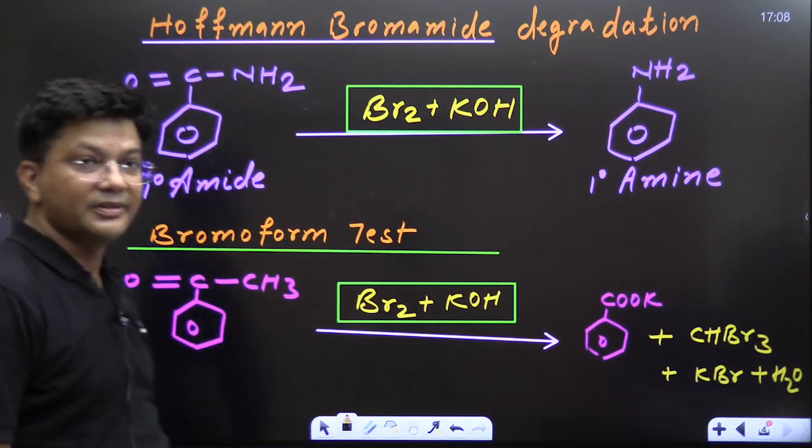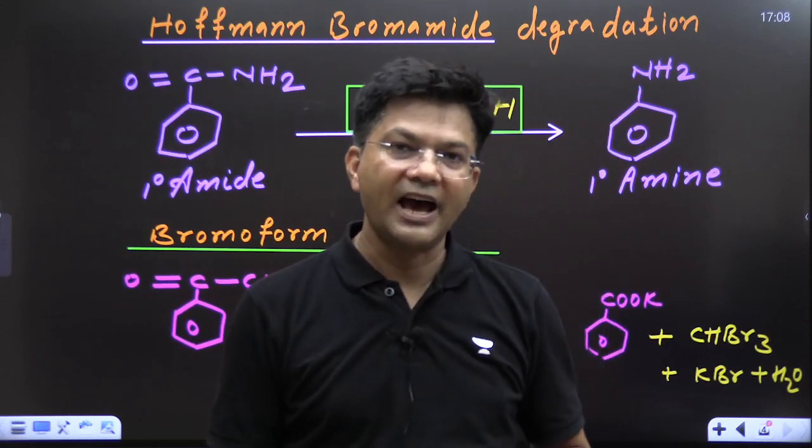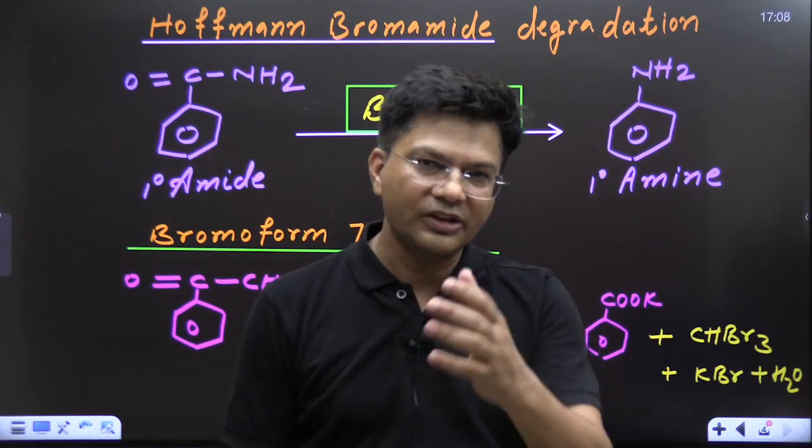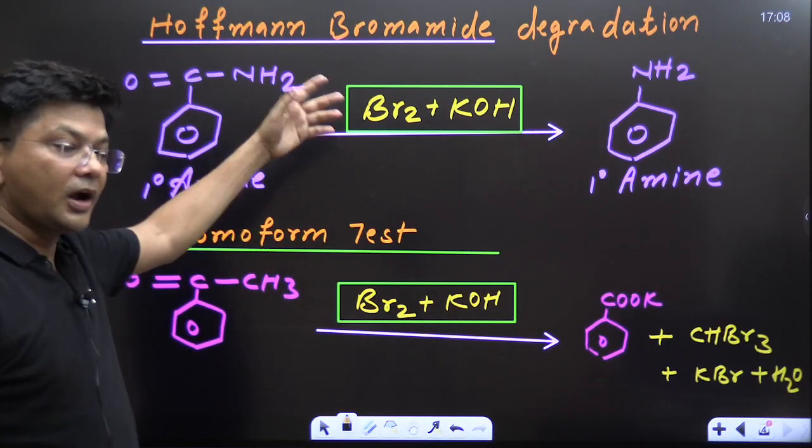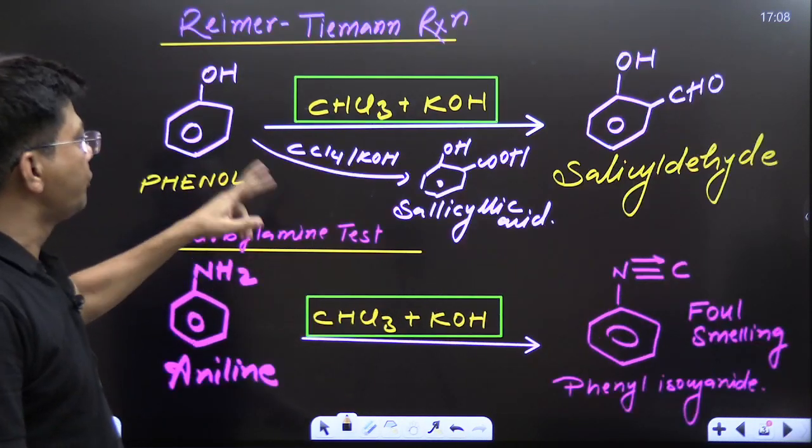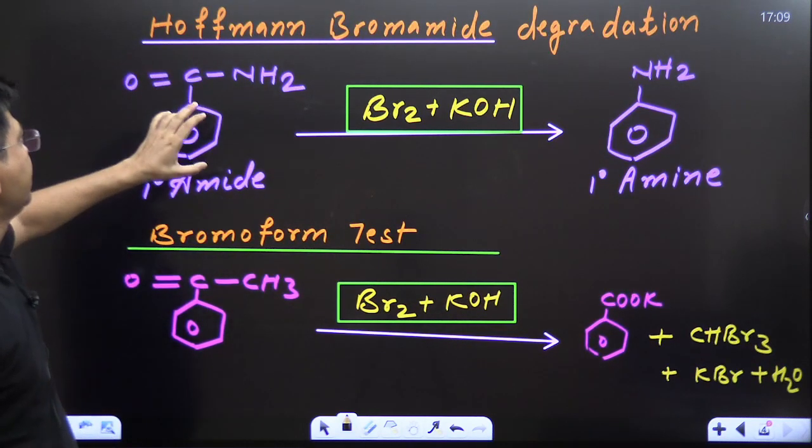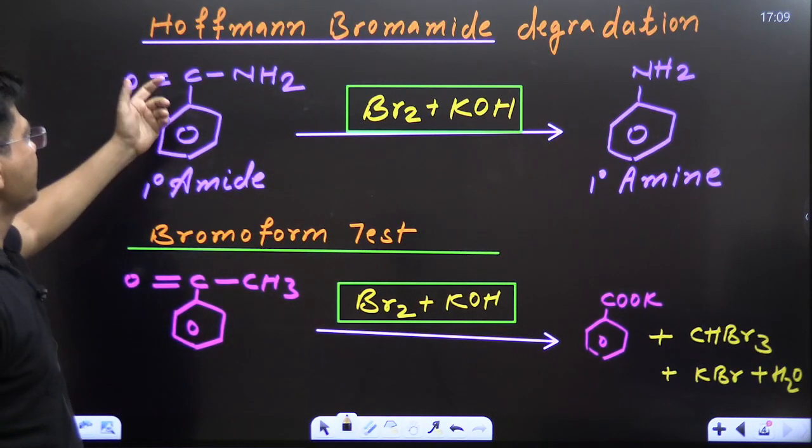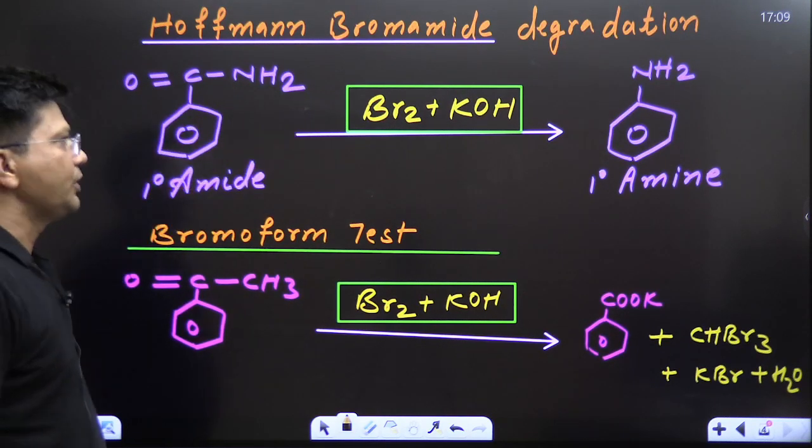Now see, two more reactions. These are total six reactions. Four already have explained. Now two more. Just see to it. Here, Br2KOH. Earlier, what was there? Chloroform KOH. And here, Br2KOH in both the two reactions. If amine, whether it is aliphatic or aromatic, one degree amide reacts with Br2KOH.